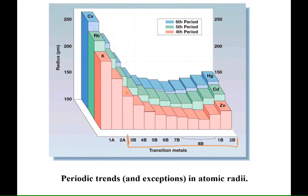Notice that if we go across the same period, for instance, zinc, and we go back to see if the size gets smaller, it does not entirely get smaller. But again, this doesn't count because it's the group B elements.